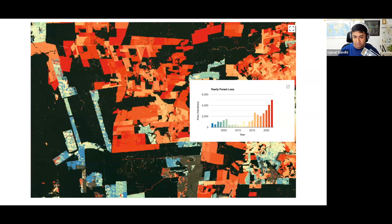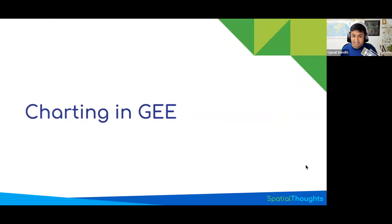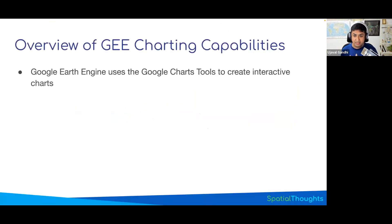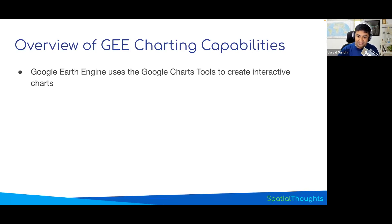Let's learn the basics of charting in Earth Engine. Google Earth Engine uses a service called Google Chart Tools, previously known as Google Charts API. The Google Chart Tools allow you to create interactive charts using JavaScript, and it's not only used by Earth Engine — web developers use it too. When you say give me a chart, Earth Engine processes the data, creates it in the format that Chart Tools understands, sends a request, and Chart Tools gives you back the chart. To understand charting in Earth Engine, you need to understand how Chart Tools work as well.